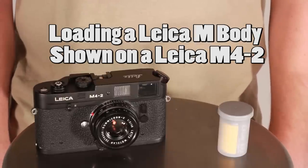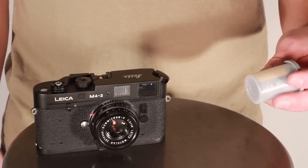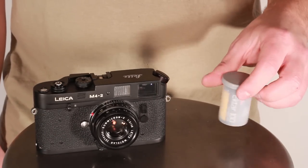Today I'm going to show you how to load film into a Leica M body. For this example I have a Leica M4 and I have a roll of Kodak Ektar 100.